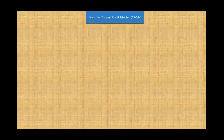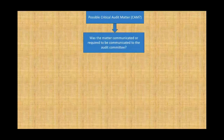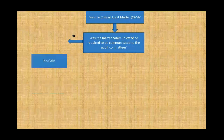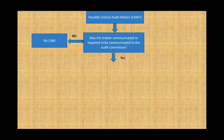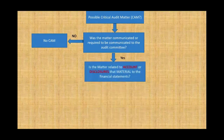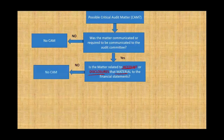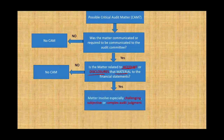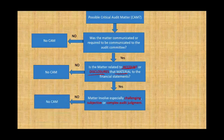Let's take a look at what's included in a CAM — the flowchart. First question: was the matter communicated or required to be communicated to the audit committee? If no, there's no CAM. If yes, second question: does the matter relate to an account or disclosure that is material to the financial statements? If no, no CAM. If yes, third question: does the matter involve especially challenging, subjective, or complex audit judgment? If no, no CAM. If yes — you have a CAM.